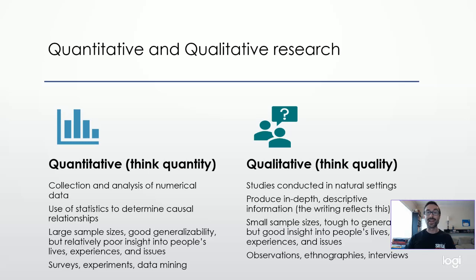Quantitative research, like any method, has its pros and cons. Pros include large sample sizes — it's way easier to mail out a survey to 100 people than to interview 100 people — and good generalizability. Cons include providing relatively poor insight into people's lived experiences. Our lives are not reduced to numbers.